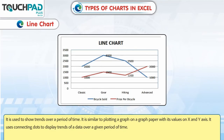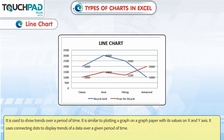A line chart is similar to plotting a graph on graph paper with its values on the x and y axis. It uses connecting dots to display trends of data over a given period of time.